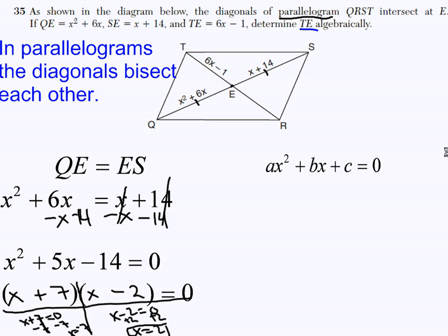Which one do I use as my value for X? You're going to use 2 and you're going to reject this value. Let me explain why you use the 2. Because if you used the value of negative 7, it's not going to work for TE. Because negative 7 times 6 is negative 42. Negative 42 minus 1 is negative 43. There's no such thing as a negative length. So, that's why you reject the negative.